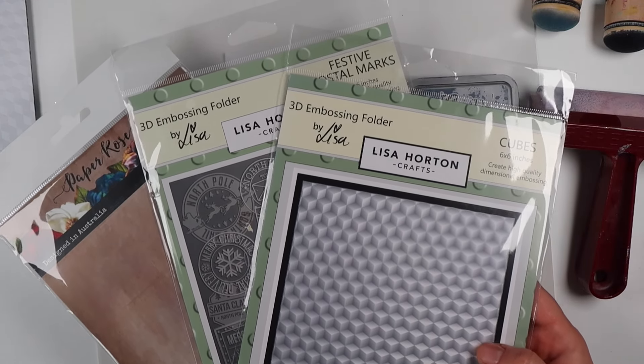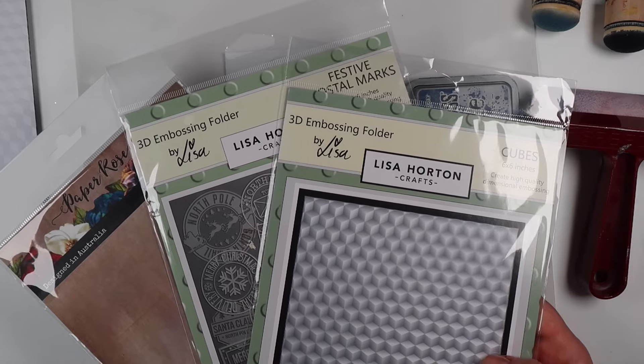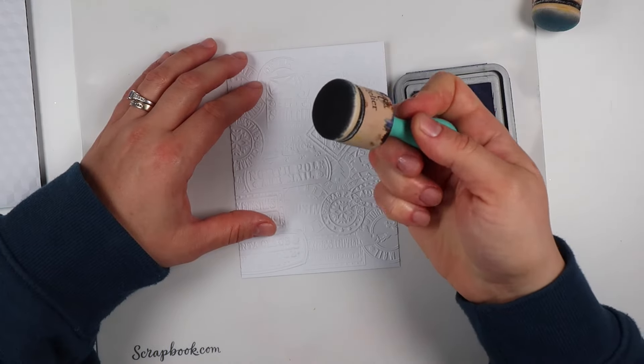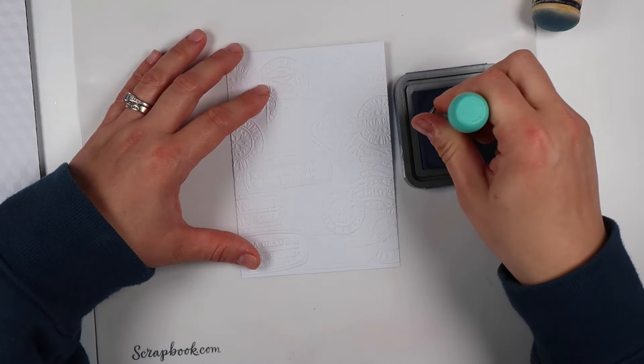Today we're focusing on using embossing folders and making them really pop off your card. The first method is the basic method: we're going to take some ink and run it over the top of our embossed panel, which has lots of raised edges.